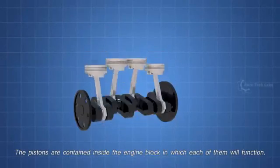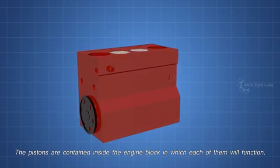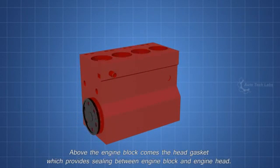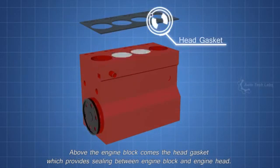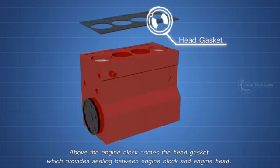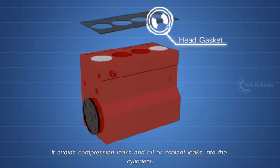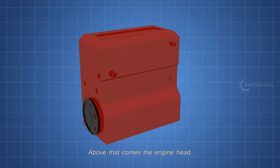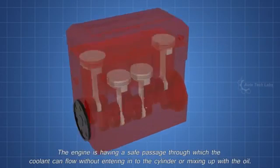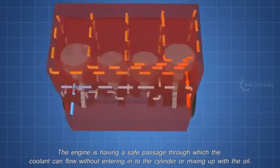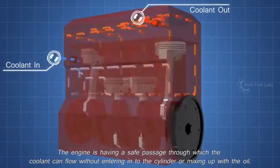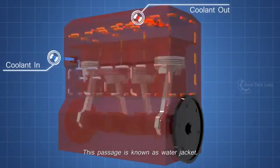The pistons are contained inside the engine block, in which each of them will function. Above the engine block comes the head gasket which provides sealing between engine block and engine head. It avoids compression leaks and oil or coolant leaks into the cylinders. Above that comes the engine head. The engine is having a safe passage through which the coolant can flow without entering into the cylinder or mixing up with the oil. This passage is known as water jacket.